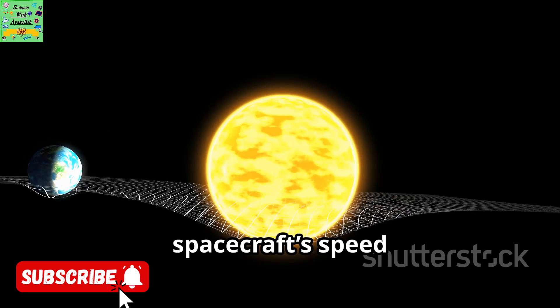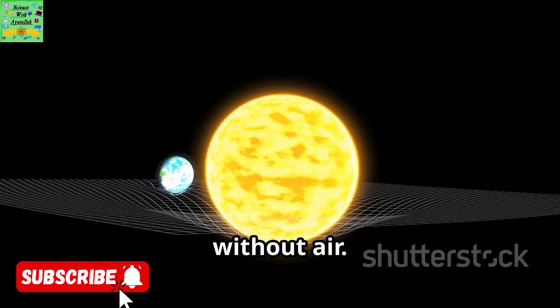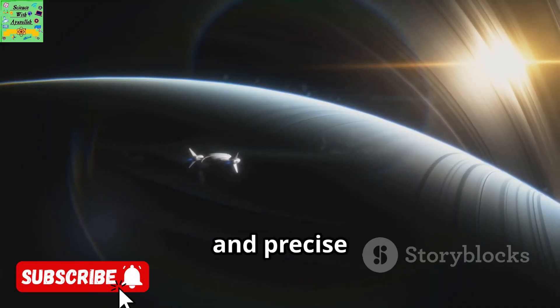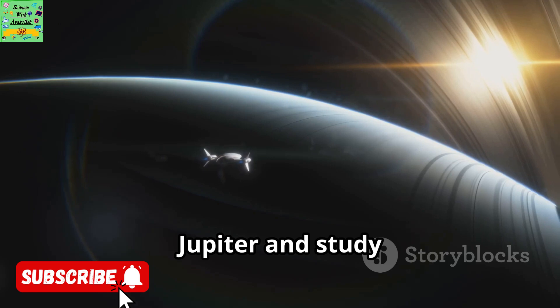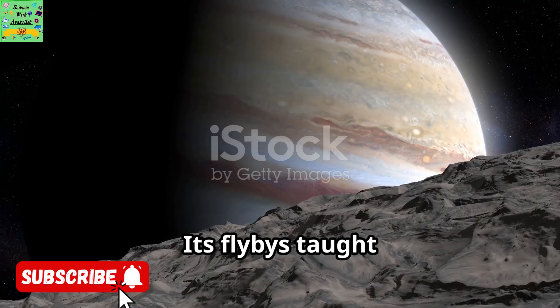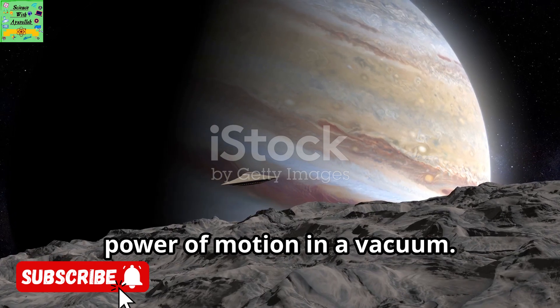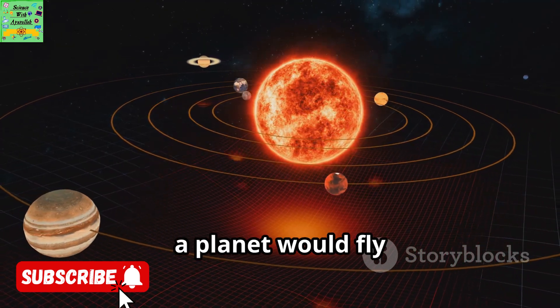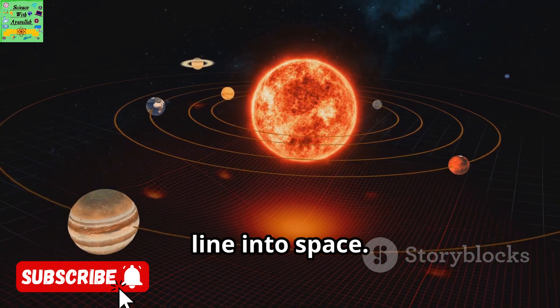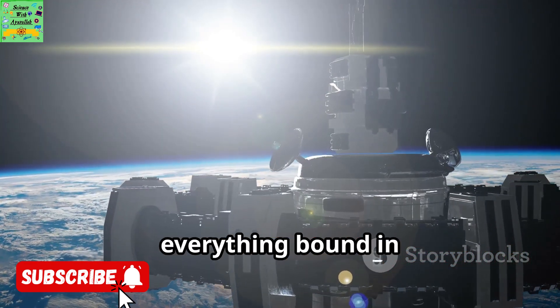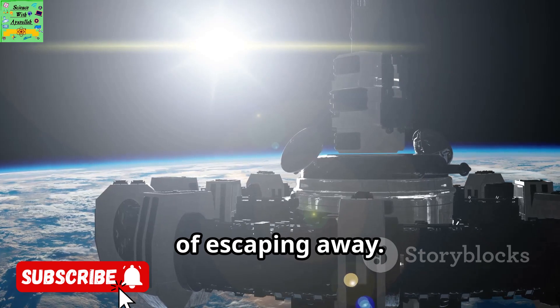Gravity assists can change a spacecraft's speed and direction without air. Juno used gravity and precise navigation to reach Jupiter and study the planet up close. Its flybys taught us about the giant planets and the power of motion in a vacuum. If the Sun's gravity didn't act as it does, a planet would fly off in a straight line into space. Gravity keeps everything bound in stable paths instead of escaping away.